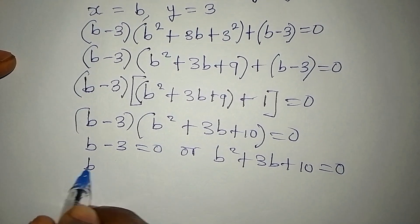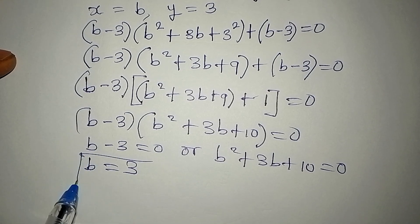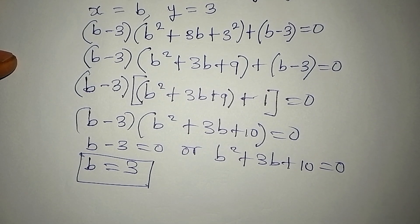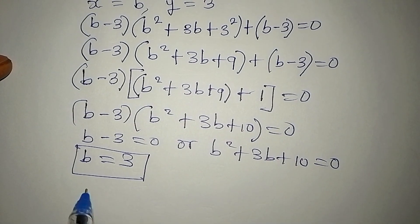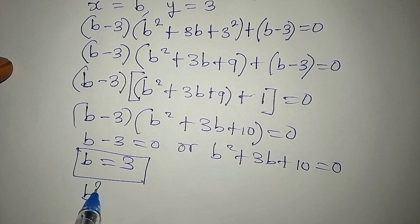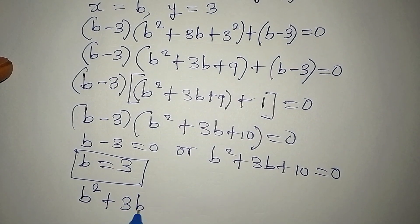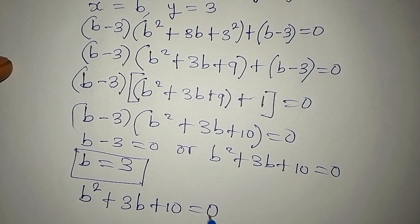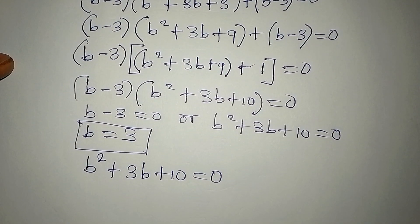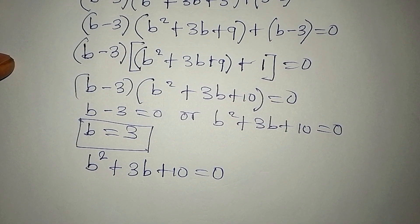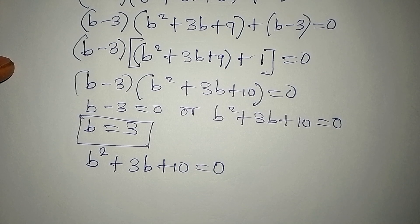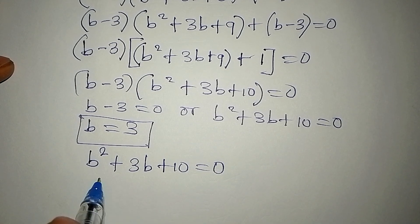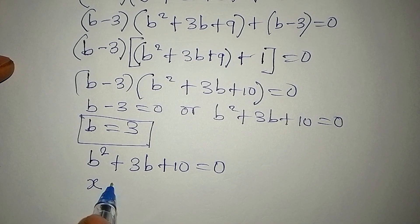From b - 3 = 0, our b equals 3, which is the real solution to the equation. From b² + 3b + 10 = 0, we can get two additional solutions. We will solve this quadratic equation using the quadratic formula.